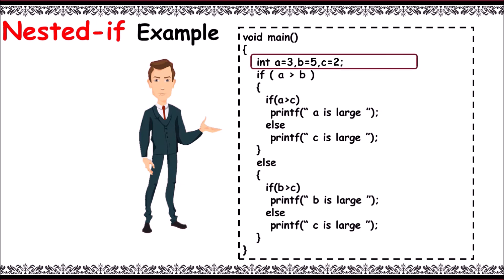If the first condition a greater than b (that is 3 greater than 5) is false, then else block gets executed and verifies whether b greater than c (that is 5 greater than 2) or not.